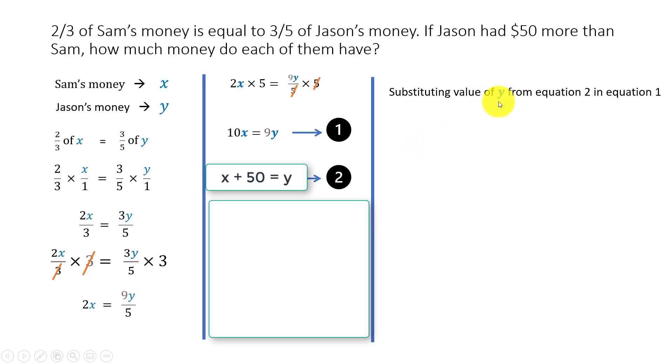In this equation, substituting the value of Y from equation 2 in equation 1. In equation 2, X plus 50 equals Y, which means Y is equal to X plus 50. I can substitute that over here. 10X equals 9 times Y. We know that Y equals X plus 50, so Y is written here as X plus 50. I can expand this.